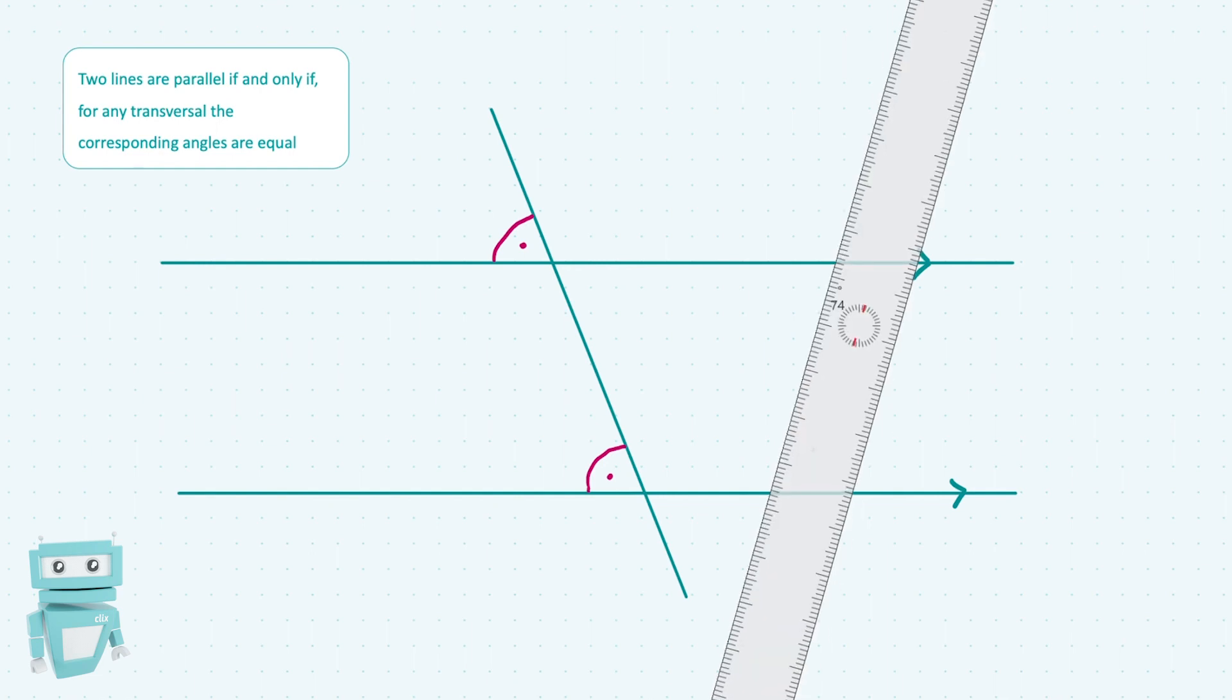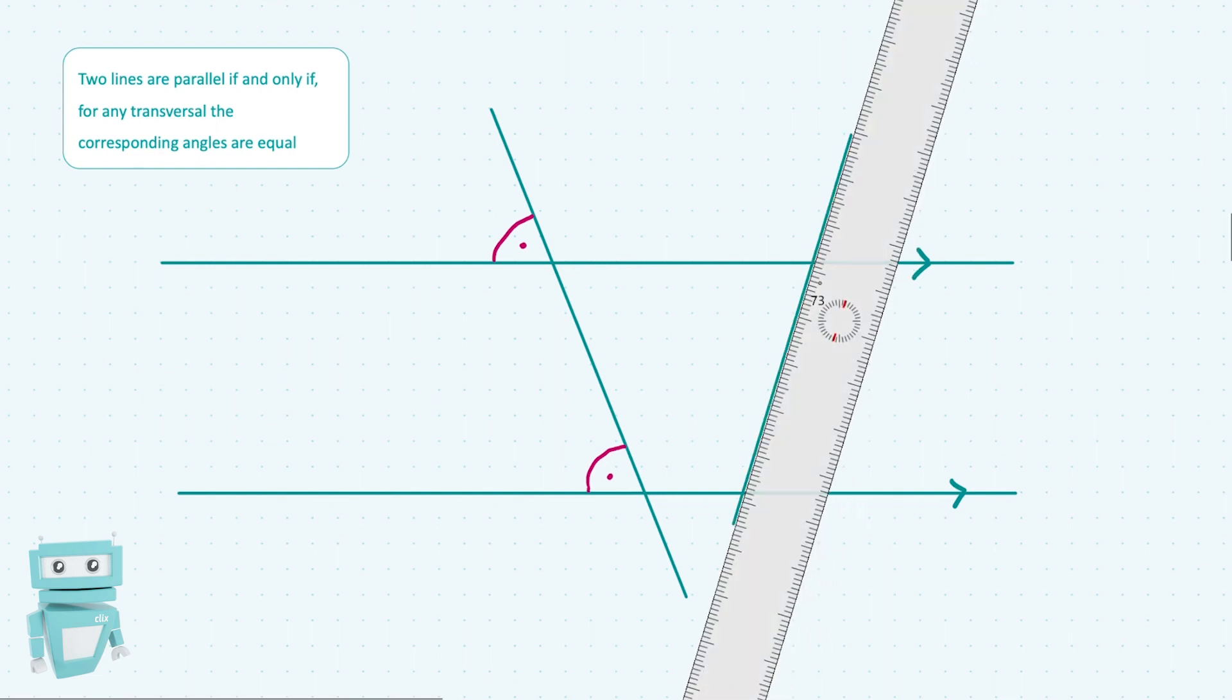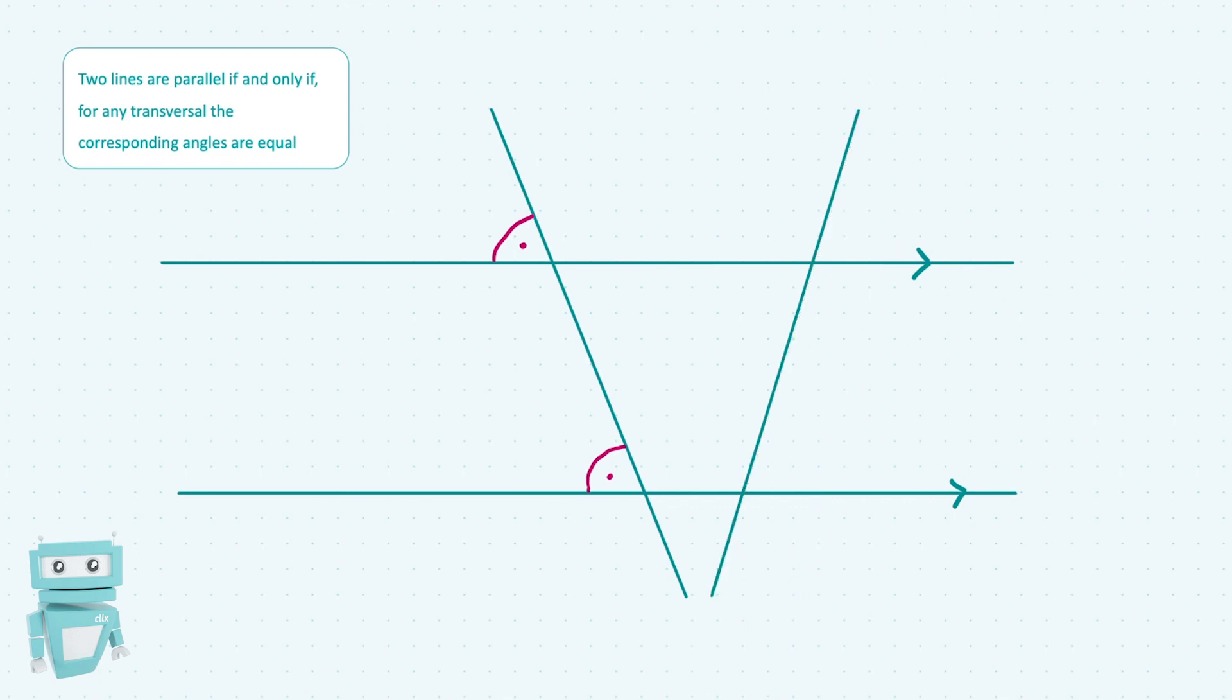It's not just this transversal. In fact, if we drew another transversal here, because these two lines are parallel, we could say that for instance these two angles are going to be equal. We have this angle here and this angle down here which is the corresponding angle.